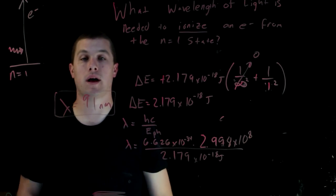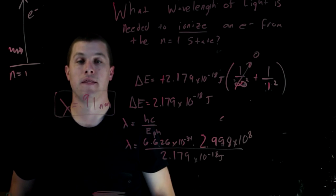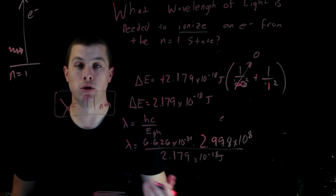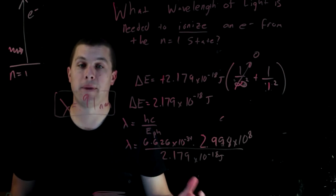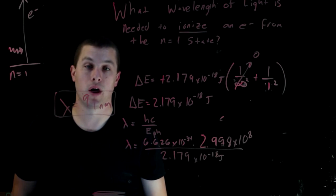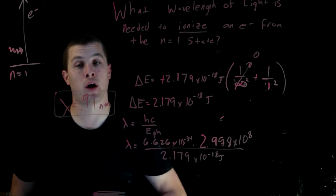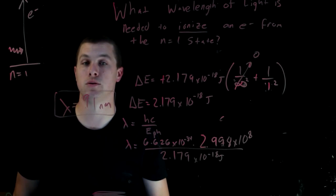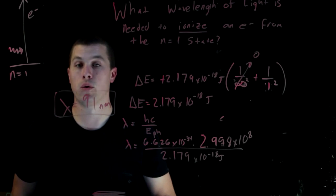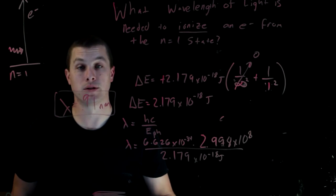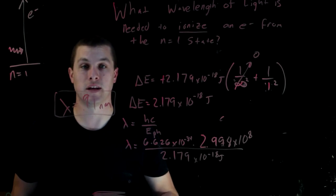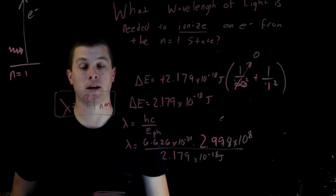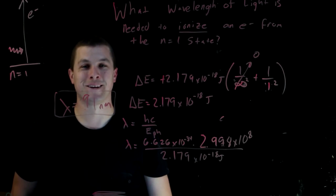So if you want to ionize a hydrogen atom, you need to hit it with 91 nanometer light — that turns out to be UV. This has been a basic introduction to spectroscopy and the hydrogen atom. We've gone over an absorption process and an emission process. With the equation introduced here, you can calculate the wavelength of light needed to absorb or emit a photon by moving the electron between any states you want. Thanks for watching this episode of Real Chemistry — you can subscribe by clicking the icon right here.